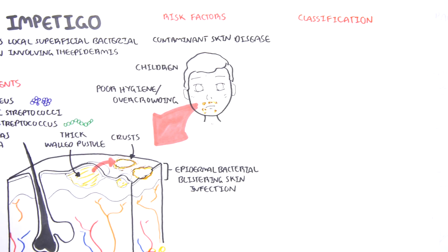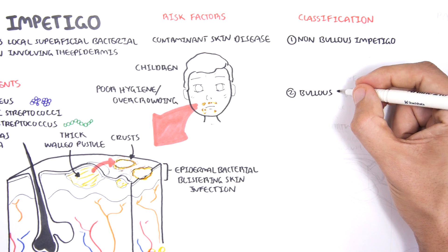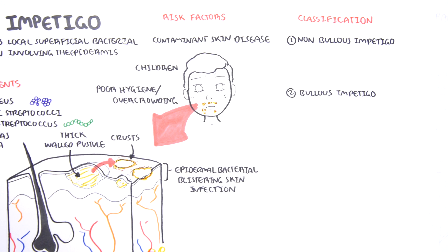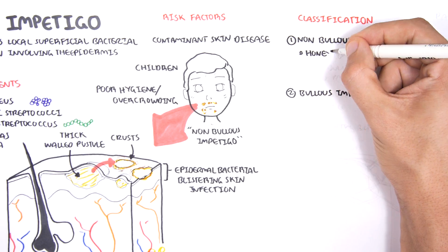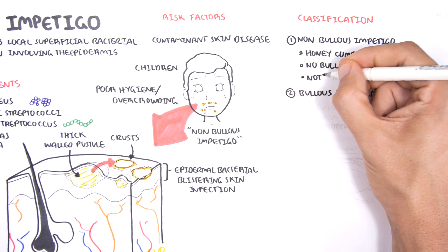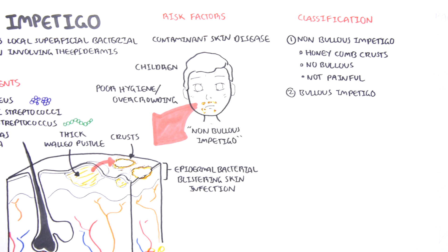Impetigo can be classified into two types: non-bullous impetigo and bullous impetigo. The example I gave of that child with the crusting lesions, blistering lesions around its mouth, is an example of non-bullous impetigo because they involve small blisters. The feature of non-bullous impetigo is the honeycomb crusting appearance, no bulla present, and it not being painful because it's more in the superficial part of the epidermis where it doesn't get in contact with the sensory nerve fibers.